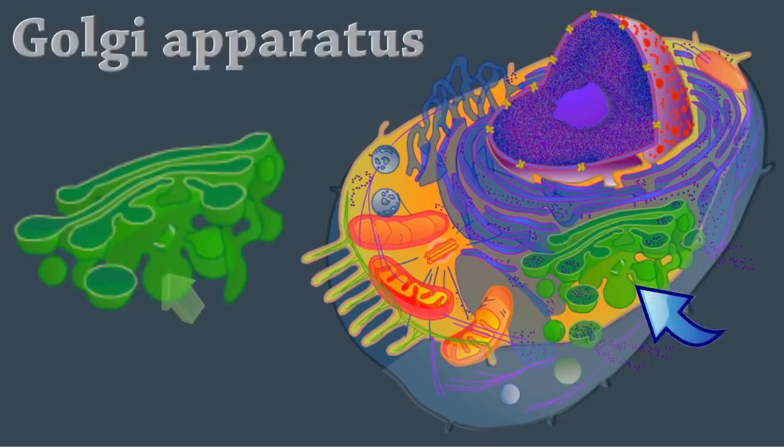Let's start with the Golgi apparatus. This is a stack of smooth membrane sacs and associated vesicles close to the nucleus. It packages, modifies, and segregates proteins for secretion from the cell, for inclusion in lysosomes, and for incorporation into the plasma membrane.